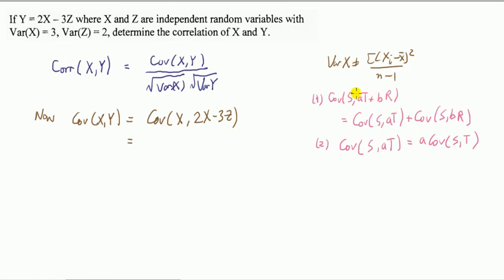The two rules we need are this: let S, T, and R be random variables, A and B be constants. Then this is like a linear operator that takes through onto each of these guys.